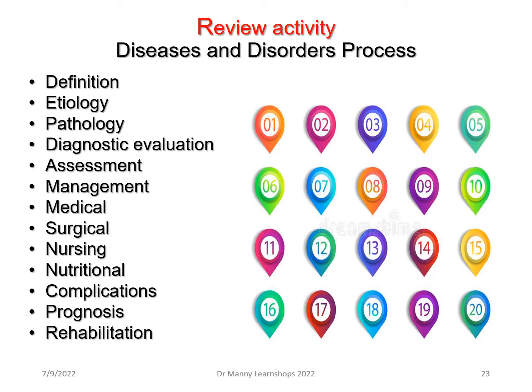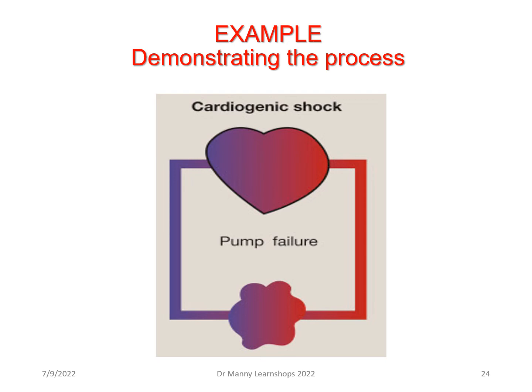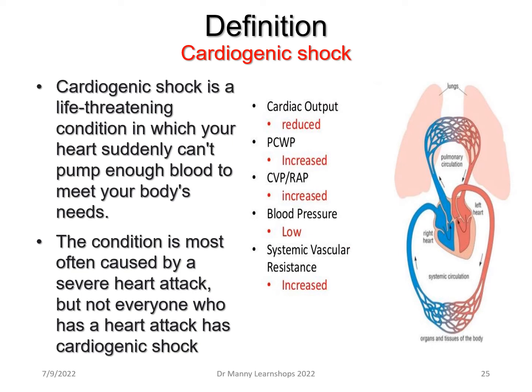It's important to review as nurses the diseases and disorders process, which includes all the subheadings we'll look at. To review this, I'm going to use the example of cardiogenic shock — pump failure — to demonstrate the process clearly. First, we need to be able to define the problem. Cardiogenic shock is a life-threatening condition in which the heart suddenly can't pump blood to meet metabolic requirements. It's most often caused by a severe heart attack, but not everyone who has a heart attack goes into cardiogenic shock.